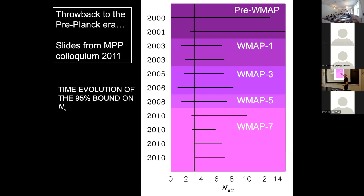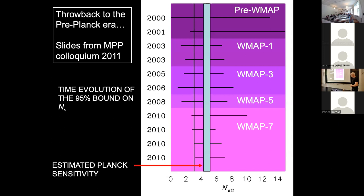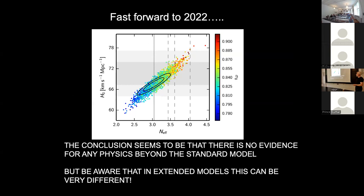Going back some years, there used to always be some preference for a higher-than-standard N_eff — a number of neutrino species higher than three. People put their faith in Planck to confirm something fishy. Of course, that's usually not how things play out — the standard model is as always pretty strong. The best-fit from latest Planck data is exactly spot on 3.045 with an uncertainty of about 0.2 on either side. That's boring, unfortunately. But it also means we can constrain many beyond-standard-model physics scenarios using this methodology.